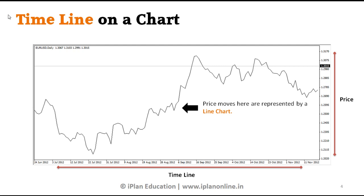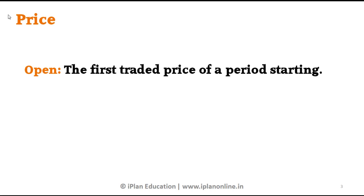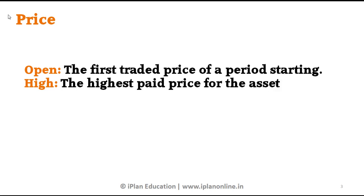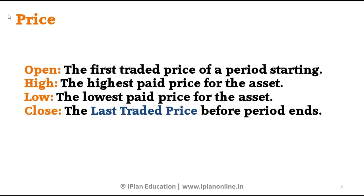So let's say there is a close price on 1st January at 100, on 2nd January it is 105, and on the 3rd day it is 110. So for the continuous past 3 days the price was in an uptrend and rising. Now normally there are 4 prices in any time frame — it can be a 1 day, 1 hour, or even a 5 minute time frame.